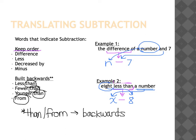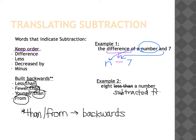Let me talk through one more example. Instead of 'eight less than a number,' if I said 'eight subtracted from a number,' you are starting with the number and then subtracting eight from that. So that means you should start with your variable: x − 8.